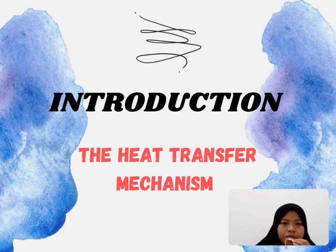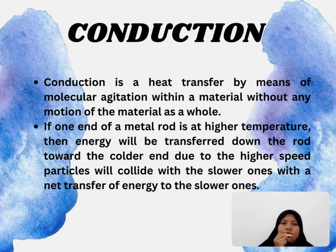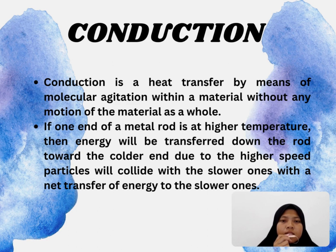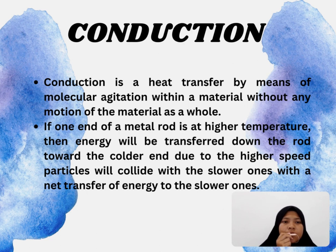Methods of heat transfer. There are 3 methods of heat transfer. These methods are known as conduction, convection and radiation. First, conduction. Conduction is heat transfer by means of molecular agitation within a material without any motion of the material as a whole. If one end of a metal rod is at a higher temperature, energy will be transferred down the rod toward the colder end, because higher speed particles collide with slower ones with a net transfer of energy to the slower ones.